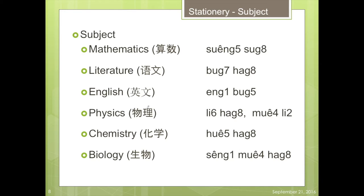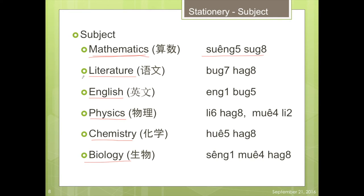In university, we have a huge number of subjects from many departments. So in this lesson, I will only list some common subjects taught below university level. We have mathematics, literature, English, physics, chemistry, biology, geography, history, informatics, painting, and physical education. Mathematics is called Sấn Súc. Literature is called Bùng Hắc. English is called Anh Muốn. Physics is called Lĩ Hắc. Chemistry is called Lĩ Hắc.